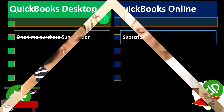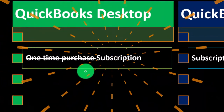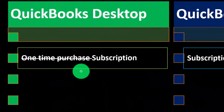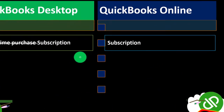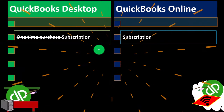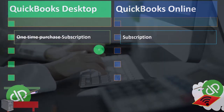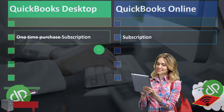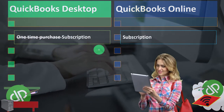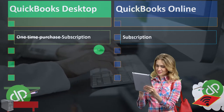QuickBooks Desktop used to be a one-time purchase model — now it's a subscription model. QuickBooks Online has always been a subscription model. This is still a relatively new change and has some significant implications, so I'm going to try to explain it in a bit of detail and look at a little bit of history of what has happened over time.